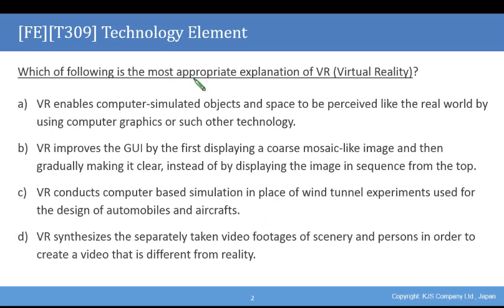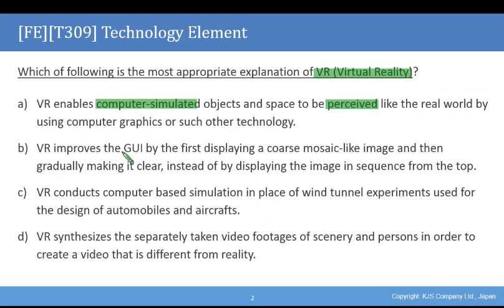Which of the following is the most appropriate explanation of VR virtual reality? A: VR enables computer simulated objects and space to be perceived like the real world by using computer graphics or such other technology.